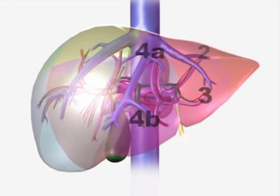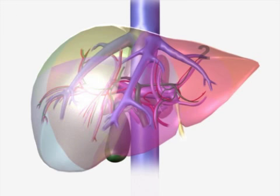The left liver is split in the plane of the left hepatic vein into an anterior and posterior sector. The left anterior sector is composed of segments 3 and 4, while the left posterior sector is composed of segment 2, the only sector composed of a single segment.